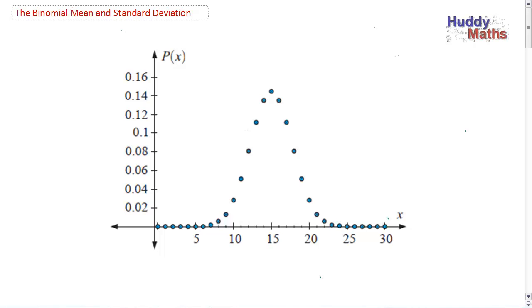Hey, welcome to the last presentation in the binomial group. Just remembering, the binomial is a discrete probability distribution. You have separate values there: nought successes, one success, two successes, etc.